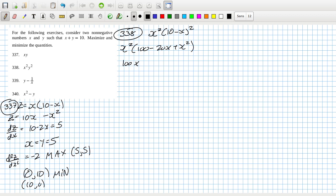So that's x squared times 100 minus 20x plus x squared. So that's 100x squared minus 20x cubed plus x to the power 4.